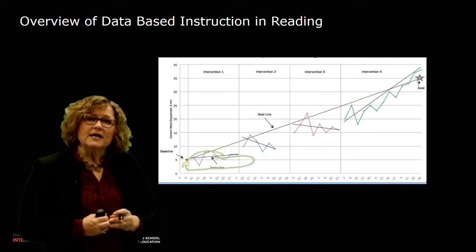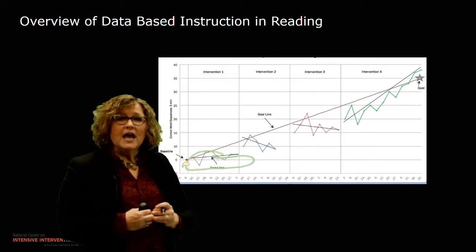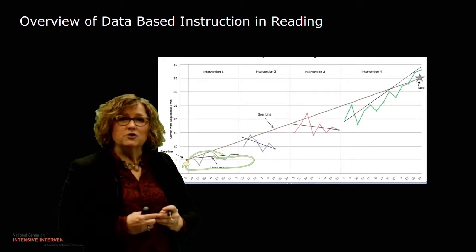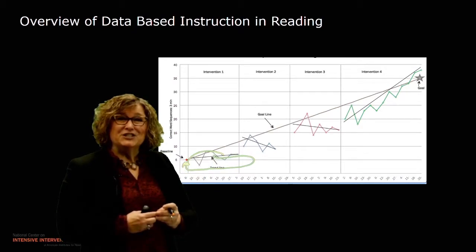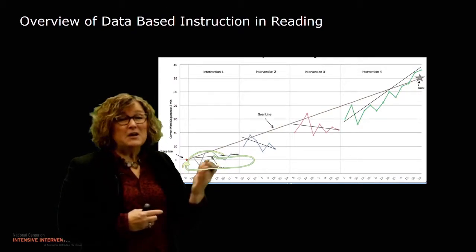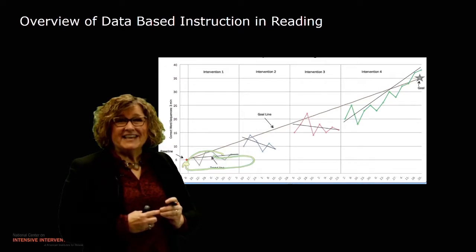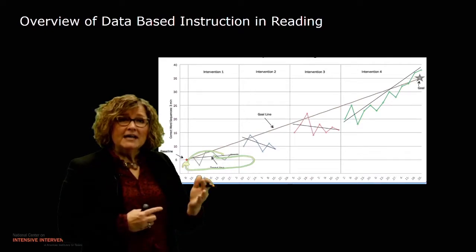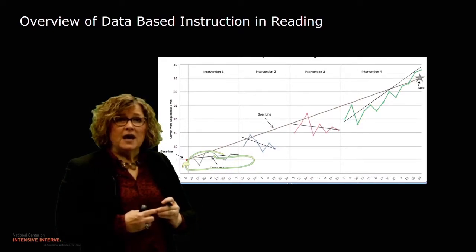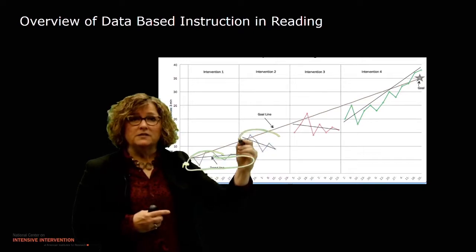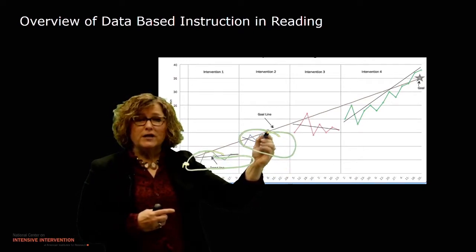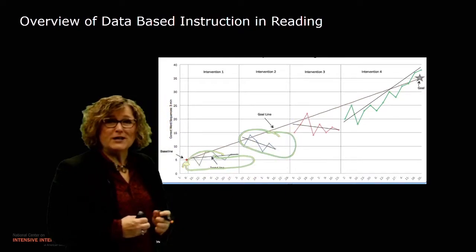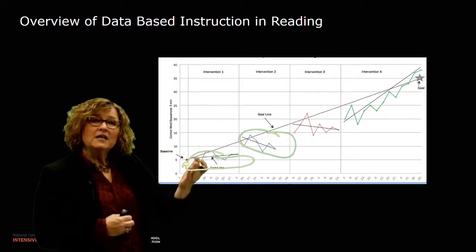So the teacher makes an instructional change and implements a second intervention. In intervention two, unfortunately, the student's trend line is yet again not on track to meet the goal line. Here's that trend of data — it's trending down away from where we want to go for the goal line.